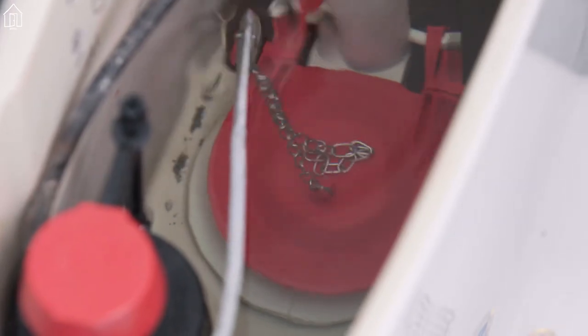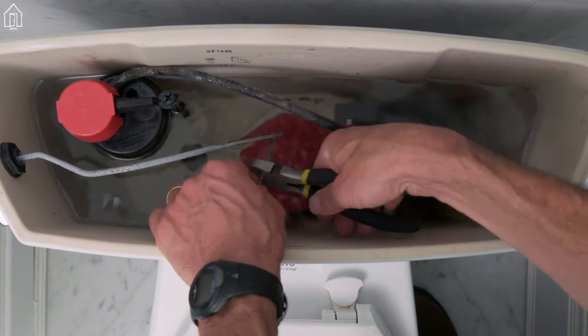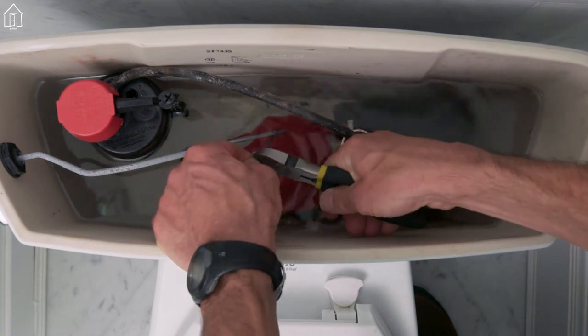Now the chain should have a little bit of slack, but if it's really long, just use some wire cutters to cut off the excess so that it doesn't get hung up under the flapper.